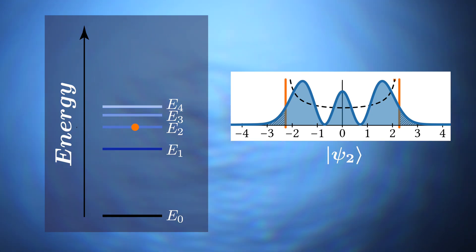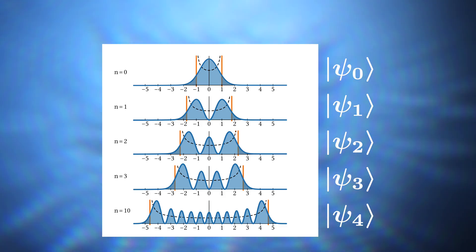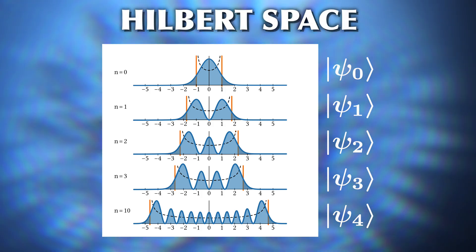Each state that a system could be in, for example each possible energy it can have, is represented by one of those kets. So if an atom has a particular energy, it is in the corresponding quantum state. And all kets together form the state space of the system, which mathematically is a Hilbert space.